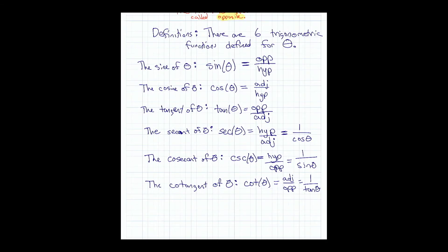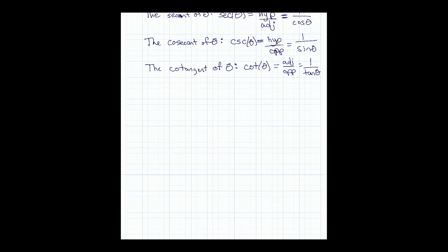So you have six formulas. The entire assignment for the six trigonometric ratios is really just using those formulas — they give you a triangle and you calculate what it asks for. For example, here's the first question: they give me a triangle and ask me to calculate secant theta.